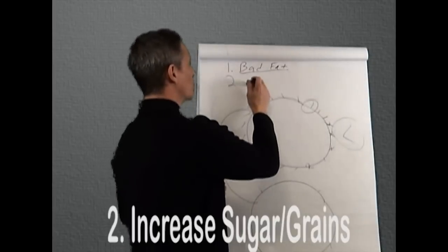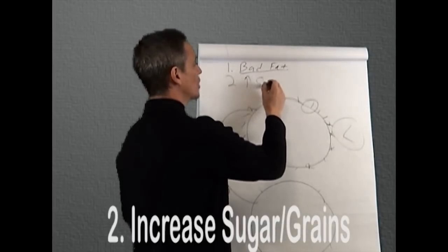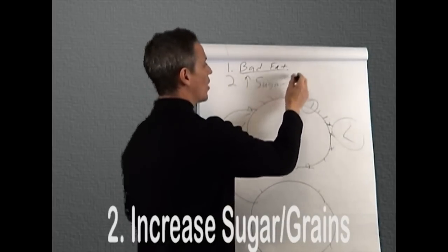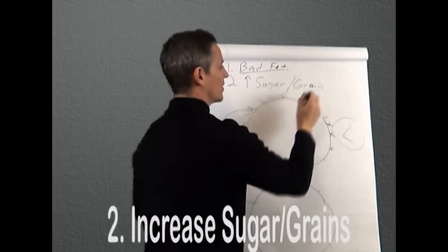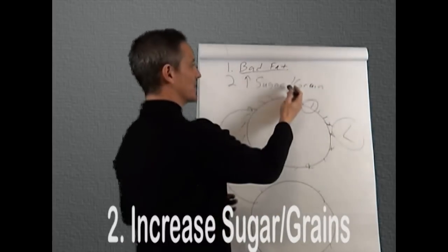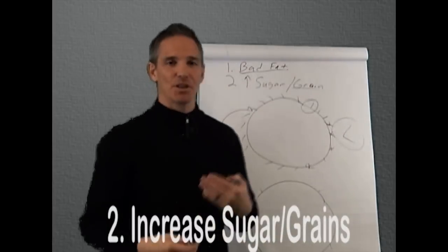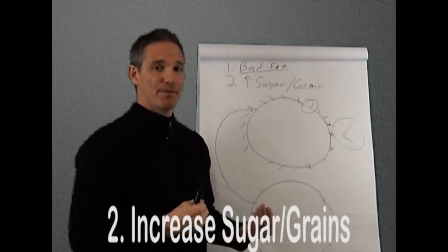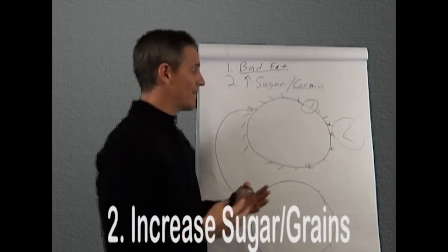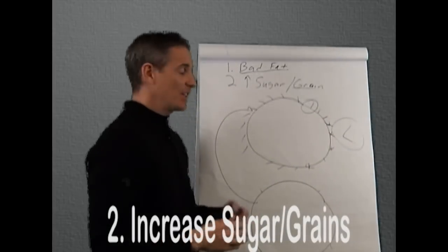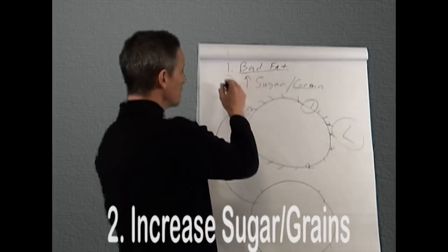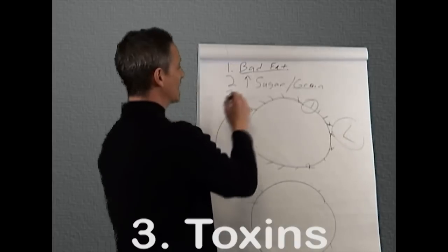Number two is of course increase in sugar, but also a sugar that most of us aren't at least thinking about as a sugar. And that's grains. The overconsumption of grains, especially genetically modified grains, is really driving this problem of the hormone receptor.